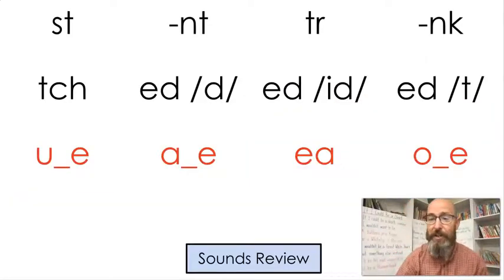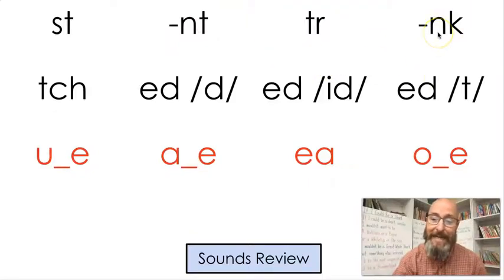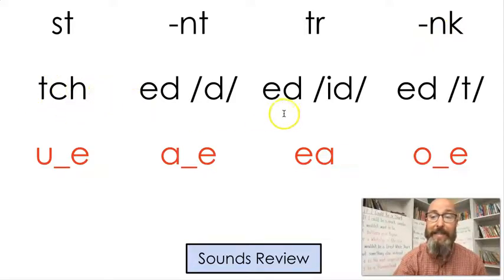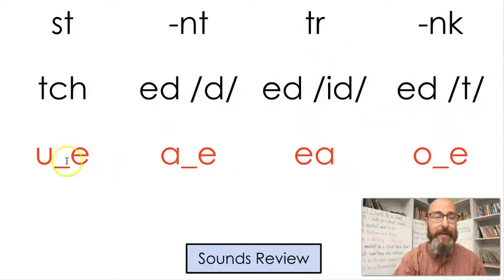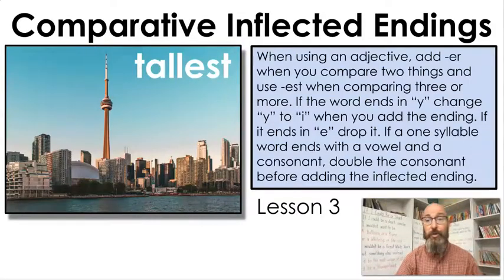Let's also review some sounds we've already learned this year. We know that '-ed' makes three sounds: it can say 'd,' 'id,' or 't.' And we've reviewed the vowels a, e, i, o, u.